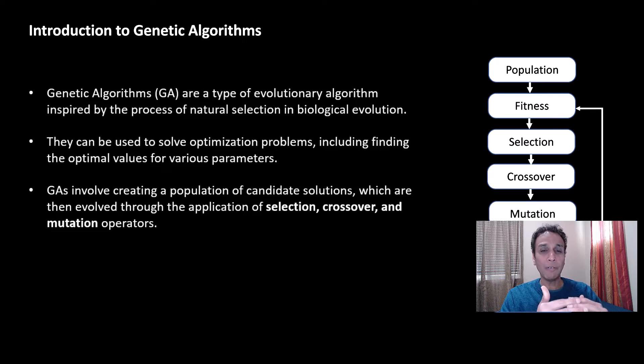These involve creating a population of candidate solutions. First, how do you start off? You have a population, let's say you have 100 things in your population, 100 people in your population. And then you evolve, like you select the top 10 people.